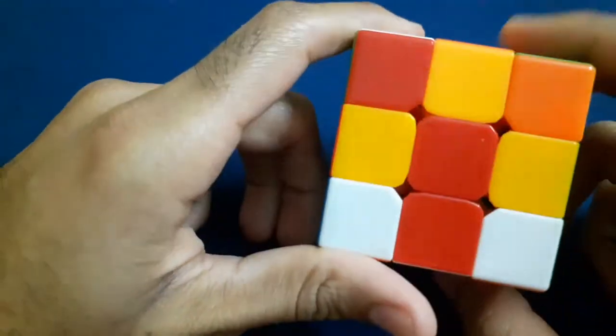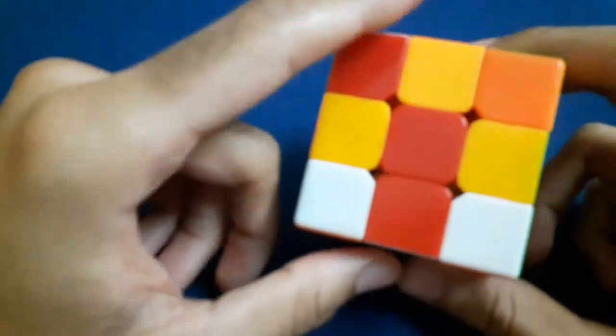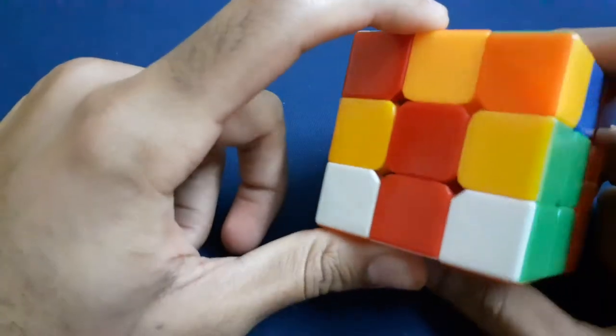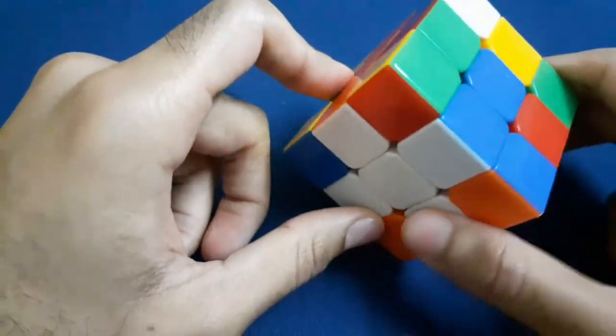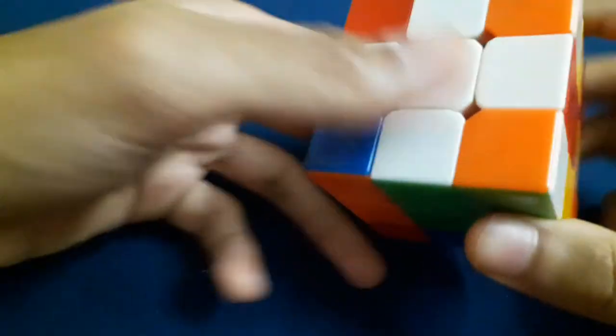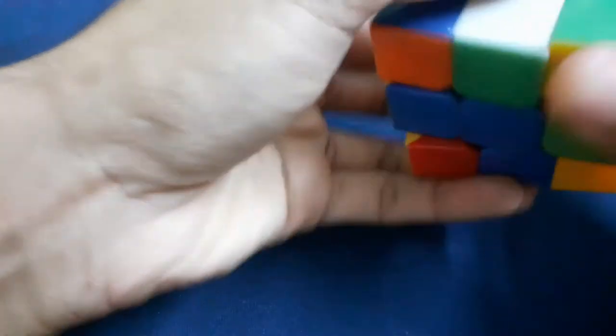So that is something you need to keep in mind. Let's just scramble it again and start over and try to solve the white cross correctly with the adjacent pieces.